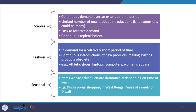The third category is seasonal merchandise — product items that usually have very high fluctuations in demand depending on the time of year. For example, around the Diwali festival in India, there is a lot of purchasing of sweets and apparel.